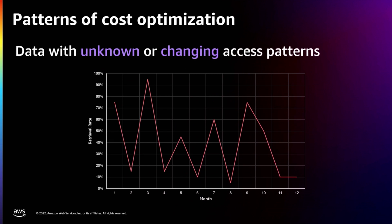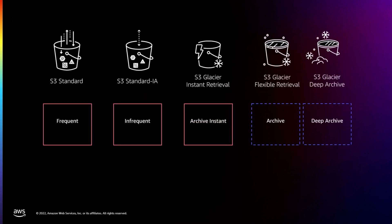These use cases show retrieval rates changing over time — very high at the beginning, then going down. After a few weeks, you access almost no data at all. After some weeks, it goes up again. For example, media files are often used at the beginning when created, then cool down. But if that media file is attached to a certain event, like a tennis match or soccer match, it might become popular again. In these use cases, it's really hard to figure out the right storage class.